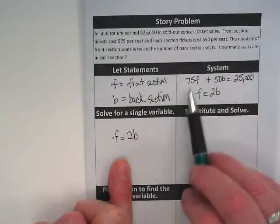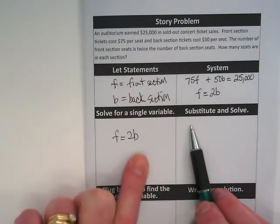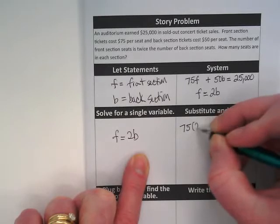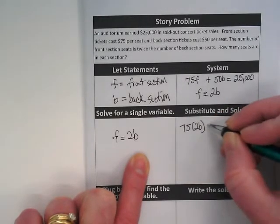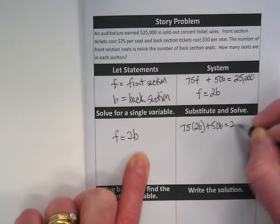So we're going to rewrite this equation with this subbed in for the F. 75 times 2B plus 50B equals 25,000.